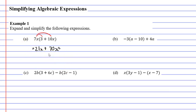We can't do any more to that — we can't simplify it. Let's now move on to question B. You'll notice that we have negative 3 at the beginning of the brackets. So we need to multiply negative 3 by the A and also by the 10 here.